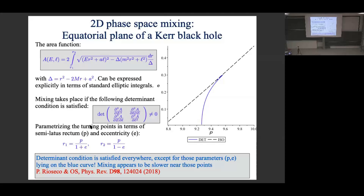Another application with Paola: equatorial orbits in Kerr — bound orbits confined to the equatorial plane of the Kerr metric. This is again a two-dimensional problem and you can also show mixing there. The determinant condition involves an area function with a more complicated structure because of the angular momentum parameter. You can express it in terms of elliptic integrals and compute the Hessian by symbolic calculations. It turns out this seems to be almost everywhere satisfied.